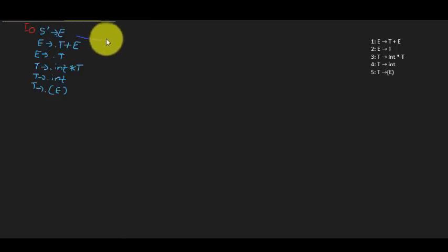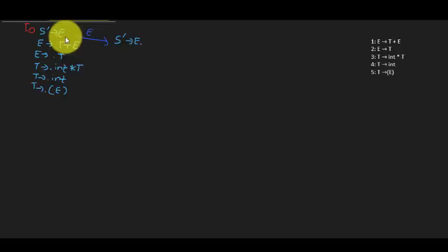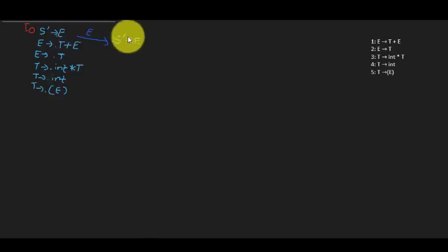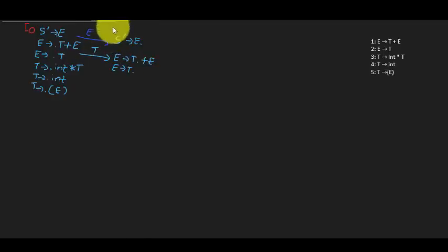On input E from I0, we get S' → E• — we've reached an accepting state. We move the dot after that input symbol. Similarly, on input T, we get two rules: E → T•+E and E → T•. We name these new states I1 and I2.